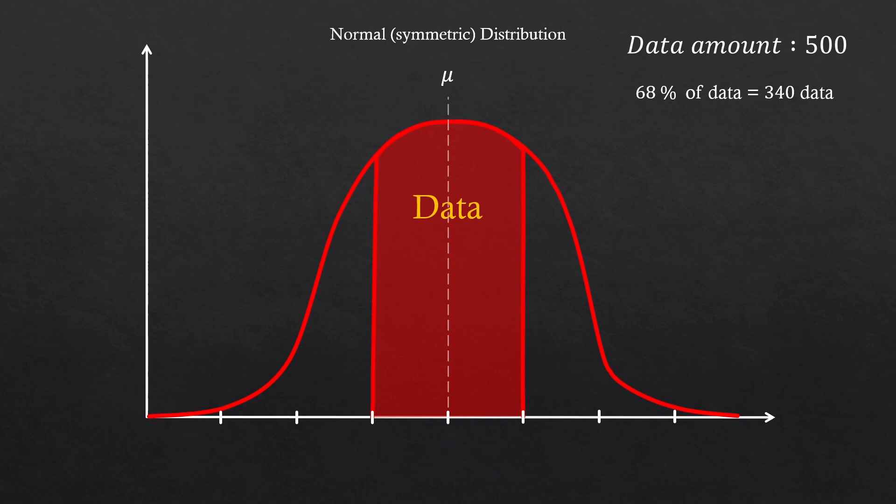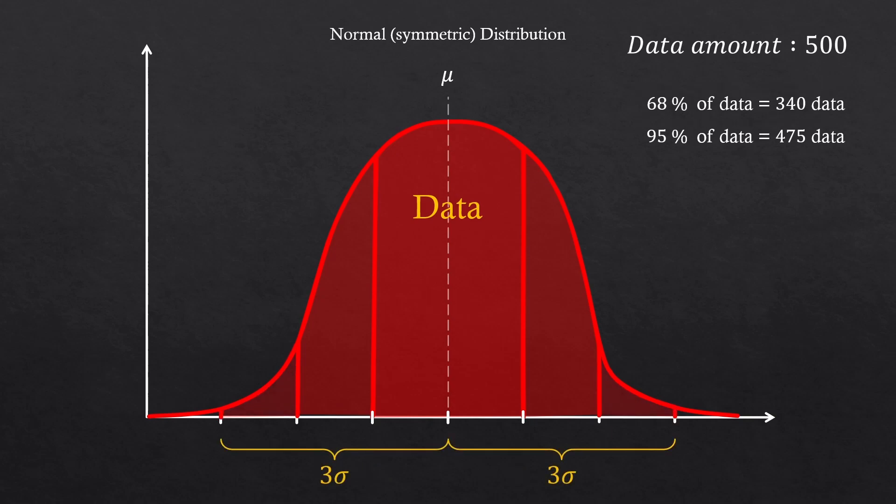If you expand further by two standard deviations, you'll notice that you have 95% of your data in this region. And 95% is about 475 data. And if you go even further by three standard deviations, you'll now have 99.7% of your data.